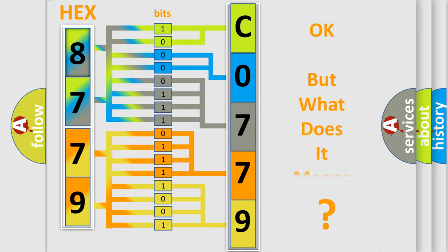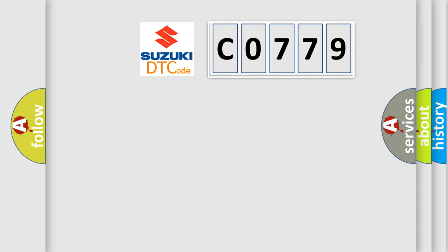The number itself does not make sense to us if we cannot assign information about what it actually expresses. So, what does the Diagnostic Trouble Code CO779 interpret specifically for Suzuki car manufacturers?